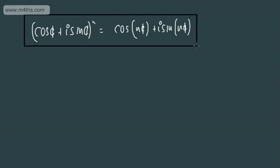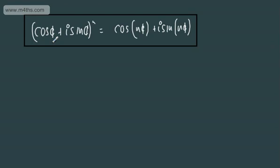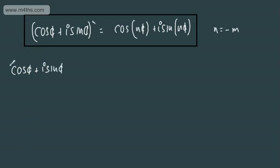What we're now going to show is that this holds true for a negative integer. I'm going to state that n is equal to negative m, where m itself is a positive integer. So let's start — what we'll have is (cos θ + i sin θ) to the power of negative m.